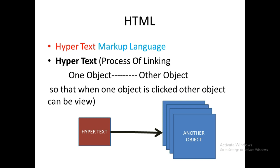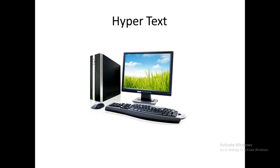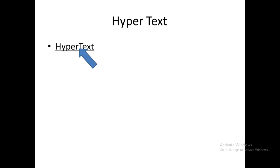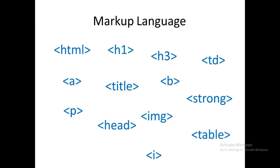HTML stands for HyperText Markup Language. In this, hypertext is the process of linking one object to another object so that when one object is clicked, the other object can be viewed. And markup language is the language which consists of tags. Tags tell about how to display data on web pages.